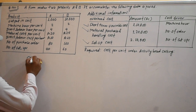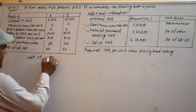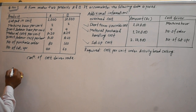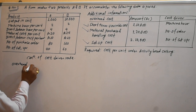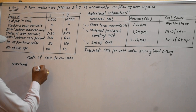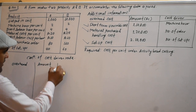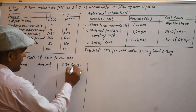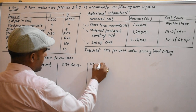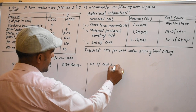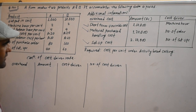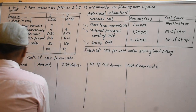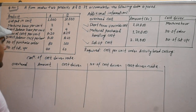Calculation of cost driver rate. The cost driver rate is not required to be separately listed. We set up a table with columns: cost item, cost, cost driver, number of cost driver volume, and cost driver rate (CDR rate).